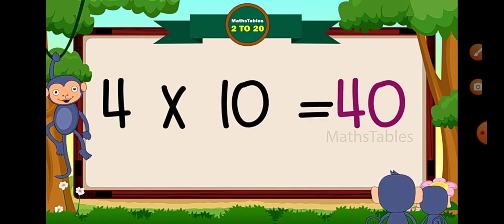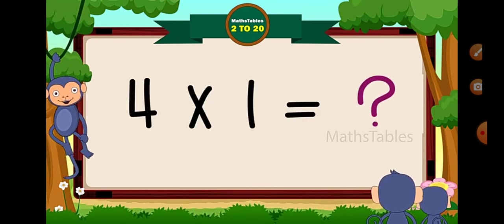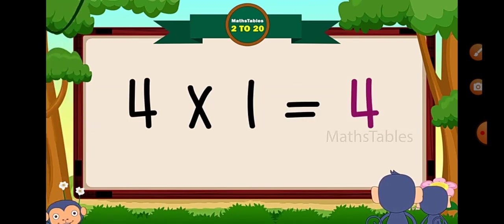Okay. Once again, we will revise the table of 4. You can do one thing. 4 × 1 = 4. You can do another thing.